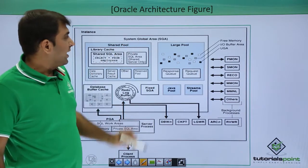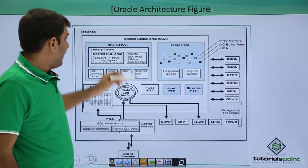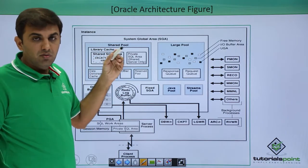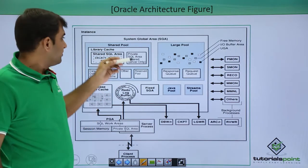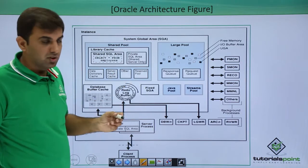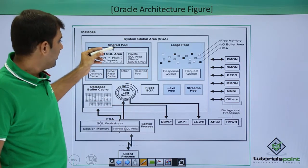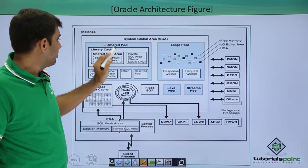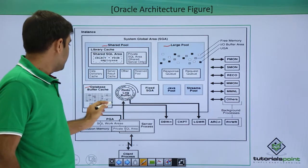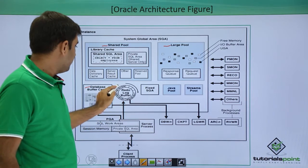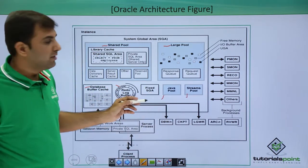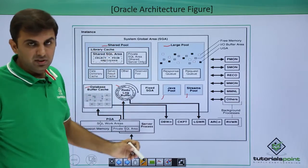Looking at the Oracle architecture figure, this is the SGA — this is one instance. An instance consists of two things: one is the Oracle SGA and another is the Oracle background processes. Under the SGA, different components are: the shared pool, the large pool, the database buffer cache, the redo log buffer, the Java pool, and the stream pool.